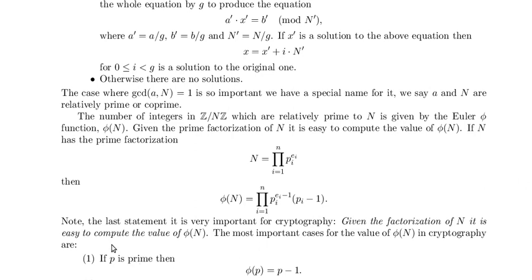Note the last statement — it is very important for cryptography. Given the factorization of n, it is easy to compute the value of phi of n.